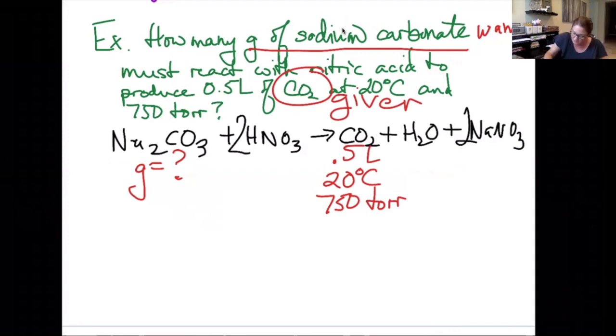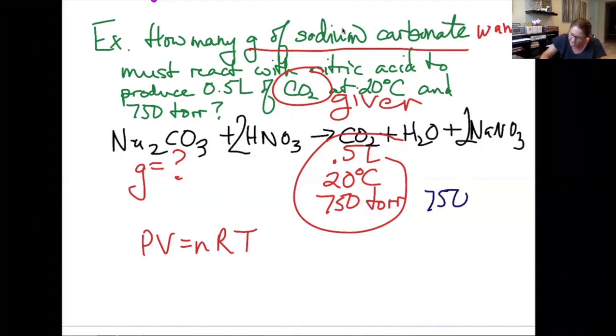So my first step getting moles, I'm going to put these numbers into PV equals nRT. I need to first convert the pressure to atm. 750 torr over x equals 760 over 1, or 750 divided by 760 gives me 0.987 atm.